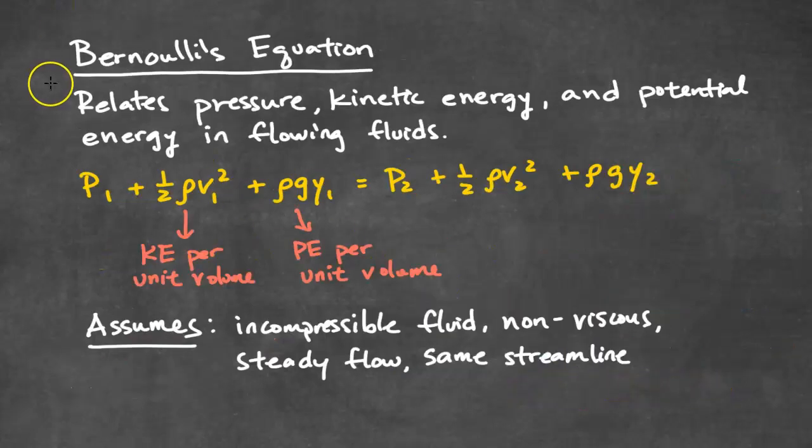Now we'll take a look at Bernoulli's equation, which equates pressure, kinetic energy, and potential energy in fluids. Here is Bernoulli's equation. This part of the equation, one-half rho V squared, represents the kinetic energy per unit volume. This part of the equation, rho GY, represents the potential energy per unit volume. Bernoulli's equation assumes that the fluid is incompressible, that it's non-viscous, that it has a steady flow, and it's flowing along the same streamline.